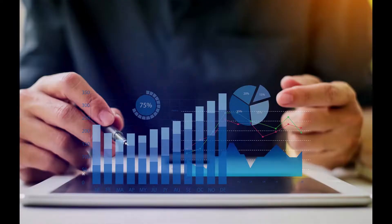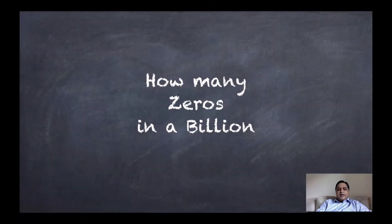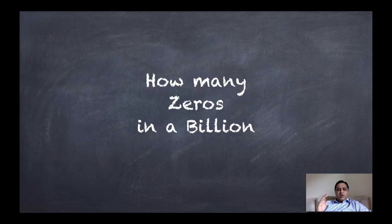The simple answer: how many zeros in a billion is 9. How many zeros in a billion — is that a question which is bothering you as well? Well, you are not alone. There are a lot of CXOs I am aware of who are troubled by this very question, and they are usually troubled much more when they have to convert a US billion dollar to Indian rupees and really struggle in terms of how many zeros there are. So in this video, I am going to talk about all these things.